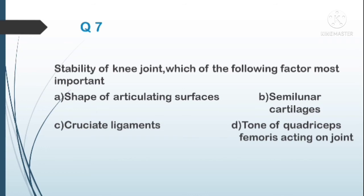Question number seven: for the stability of the knee joint, which of the following factor is most important? A) shape of articulating surfaces, B) semilunar cartilage, C) cruciate ligaments, D) tone of quadriceps femoris acting on the joint. The answer is C — the main factor is the cruciate ligaments.